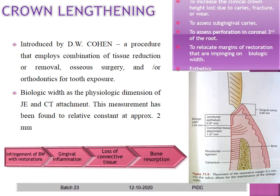Before the procedure, it is important to understand biologic width. Biologic width is the sum of the junctional epithelium and the connective tissue attachment, totaling approximately 2.04 mm. If crown placement infringes on this area — placing the crown margin within this zone — it may lead to gingival recession, loss of connective tissue, and further bone resorption.